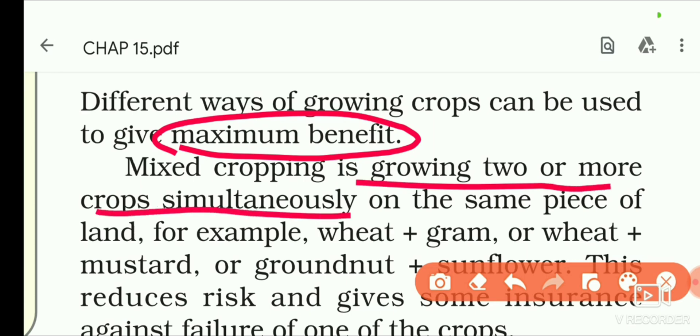Mixed cropping is growing two or more crops simultaneously on the same piece of land. For example, wheat and gram. If we use two crops on the same land, then we use mixed cropping.